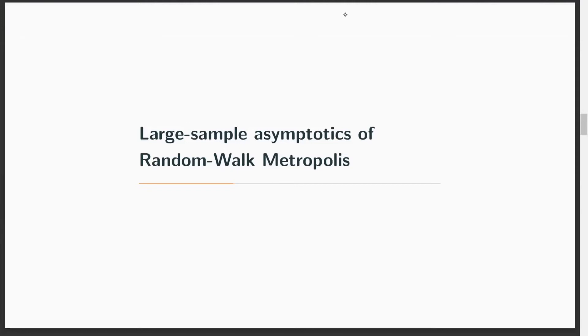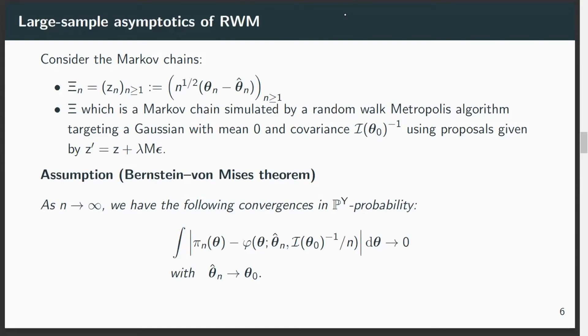On this basis, we want to develop our theory of a large sample analysis of the random walk Metropolis algorithm, and for that we need to set up some notation. Consider the following Markov chain. We rescale all our Markov chains because the posterior distribution usually concentrates, and in order to obtain a non-trivial limit, we need to change the scaling of our matrix, of our Markov chain.